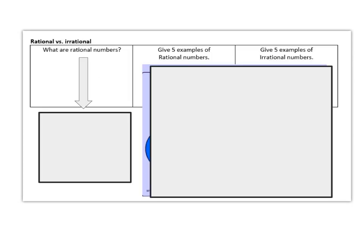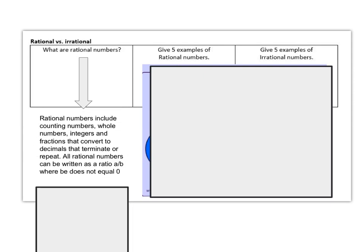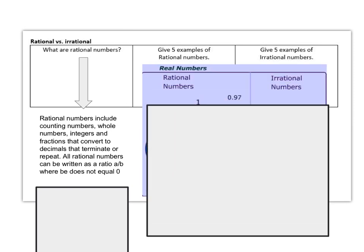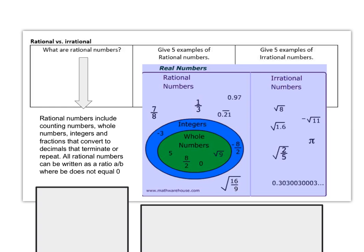Rational versus irrational numbers. So what are rational numbers? Rational numbers include counting numbers, whole numbers, integers, and fractions that convert to decimals that terminate or repeat. All rational numbers can be written as a ratio of A over B, where B does not equal 0. And then you need to give 5 examples of rational numbers and 5 examples of irrational numbers, so now would be a good time to pause and make sure that your examples were correct.